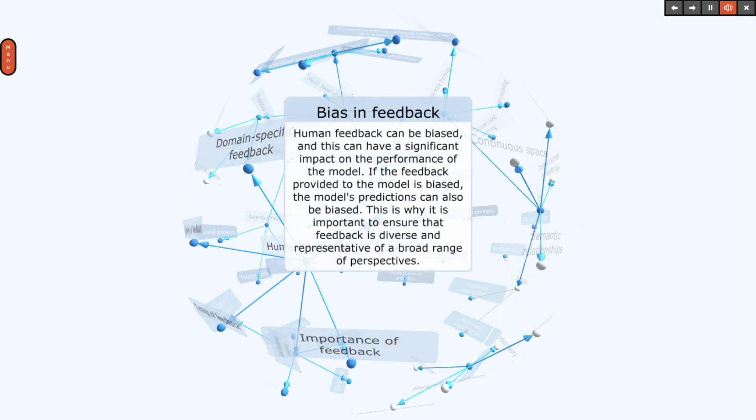Human feedback can be biased, and this can have a significant impact on the performance of the model. If the feedback provided to the model is biased, the model's predictions can also be biased. This is why it is important to ensure that feedback is diverse and representative of a broad range of perspectives.